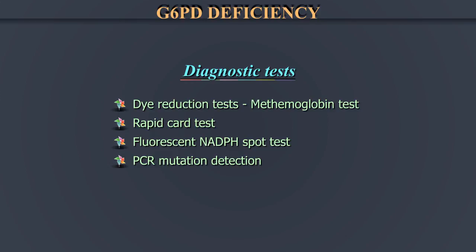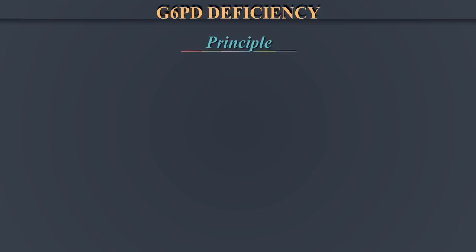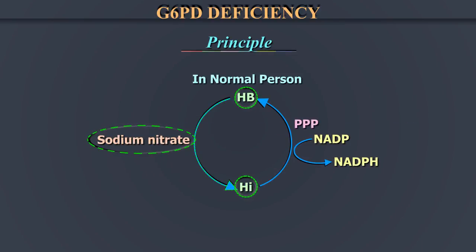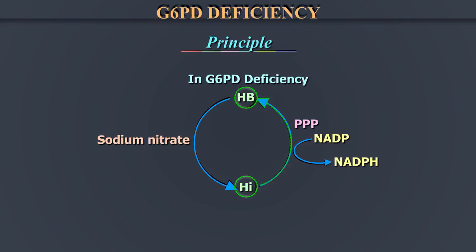The methemoglobin reduction test for G6PD deficiency — Principle: Sodium nitrite converts hemoglobin to methemoglobin (HI). Incubation of the samples with methylene blue allows stimulation of the pentose phosphate pathway in subjects with normal G6PD levels. The methemoglobin is reduced during the incubation period. However, in G6PD deficient persons, the blockage in the pentose phosphate pathway prevents this reduction. When no methylene blue is added, methemoglobin persists, which acts as a positive control.